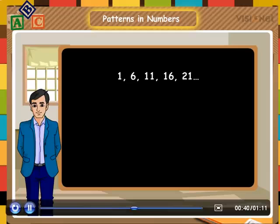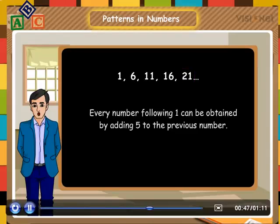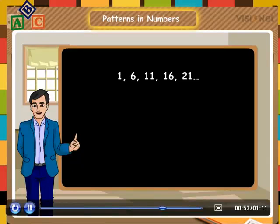So, what is the rule followed in the pattern of numbers? The rule is that every number following 1 can be obtained by adding 5 to the previous number. Can you write the next number after 21?